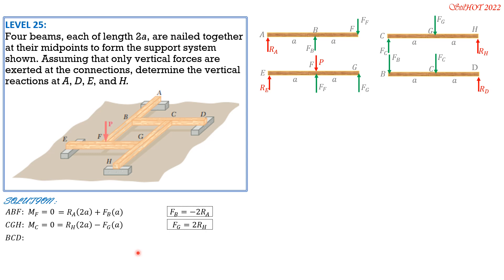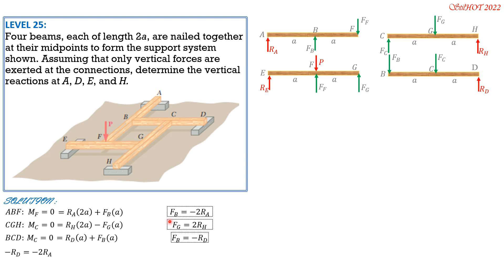Proceeding to member BCD: setting moment at C equal to zero gives R_D times A plus F_B times A equals zero, so F_B equals negative R_D. Since F_B also equals negative 2R_A, we get negative 2R_A equals negative R_D, establishing the important relationship R_D equals 2R_A.